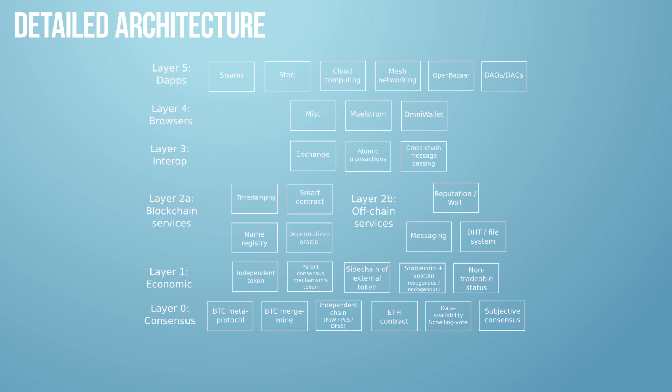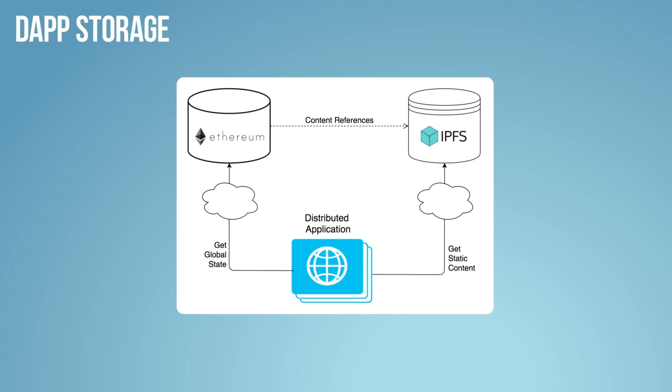Layer one is the economic layer — the coins — what value is being transferred for performing different operations. Layer zero is where everything meets consensus and everything is agreed upon. So from a very high level to a very detailed architecture diagram — this is just meant to touch a little bit on web 3.0 and hopefully excite you. Here's a simpler diagram: the blue would be essentially your mobile application or web browser running a distributed application.